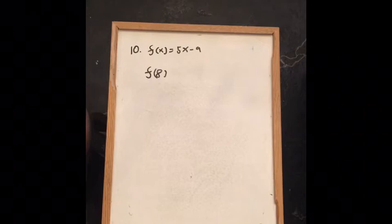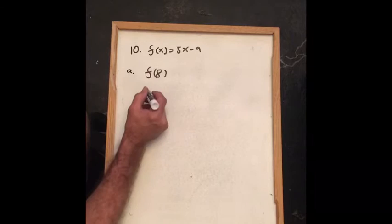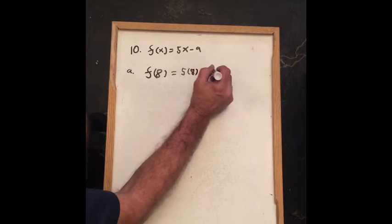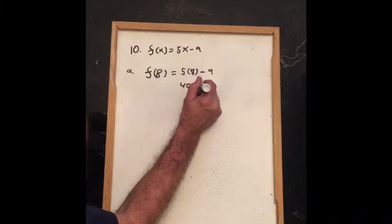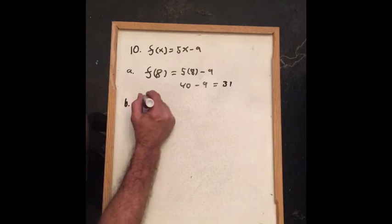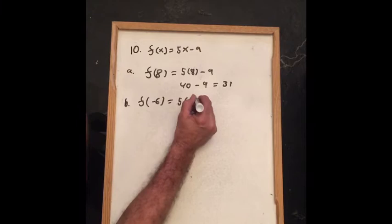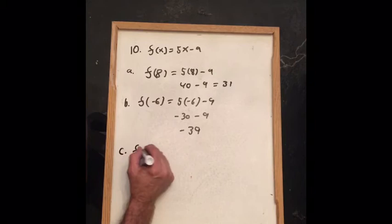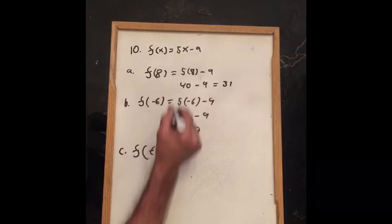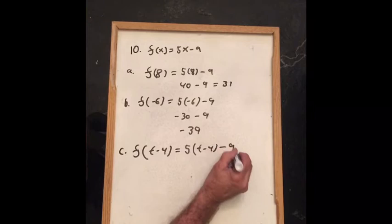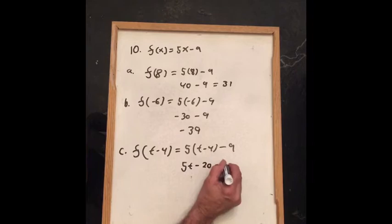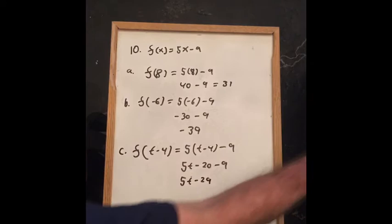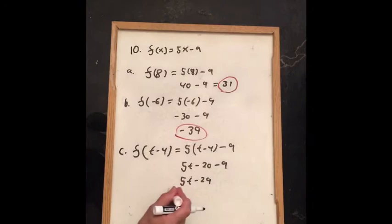Problem 10 gives us the function f(x) equals 5x minus 9. For part A, f(8): substitute 8 for x to get 5 times 8 minus 9, which is 40 minus 9, equal to 31. For part B, f(−6): 5 times negative 6 minus 9 is negative 30 minus 9, or negative 39. For part C, f(T − 4): substitute T minus 4 for x to get 5 times (T minus 4) minus 9; distributing gives 5T minus 20 minus 9, or 5T minus 29.